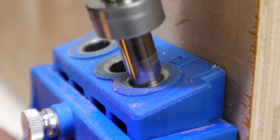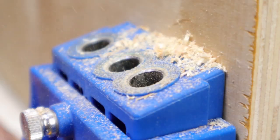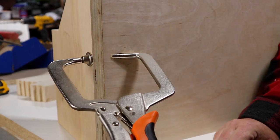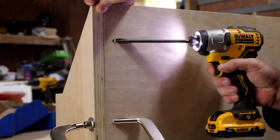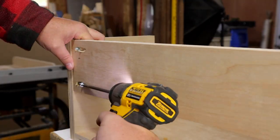I can now start to assemble the filament box. I use pocket screws to attach the sides to the bottom and then add the support across the back.